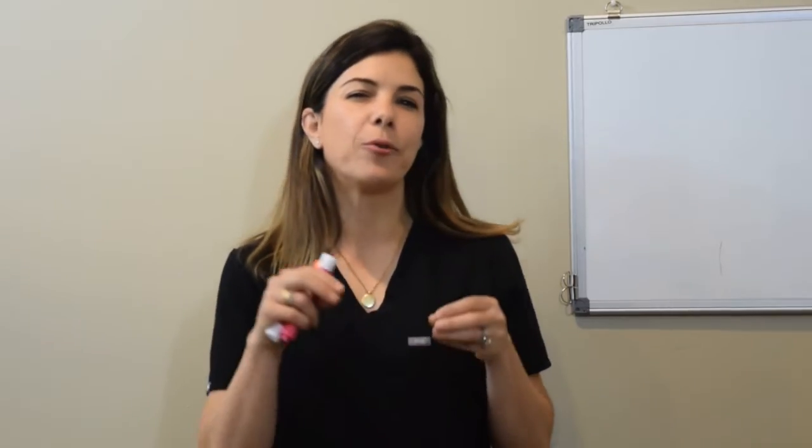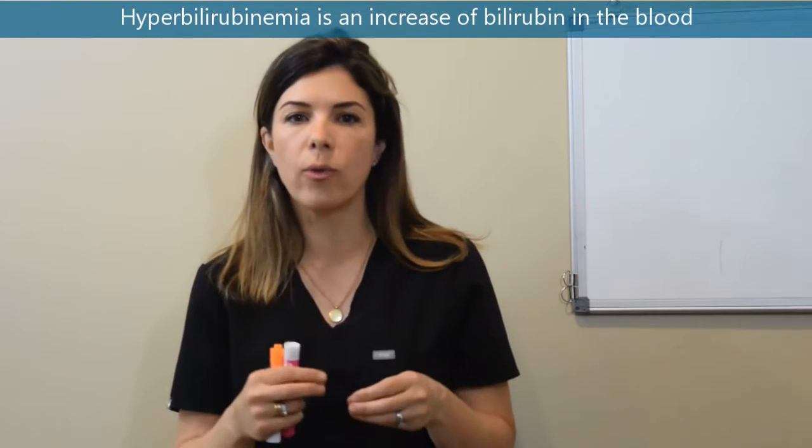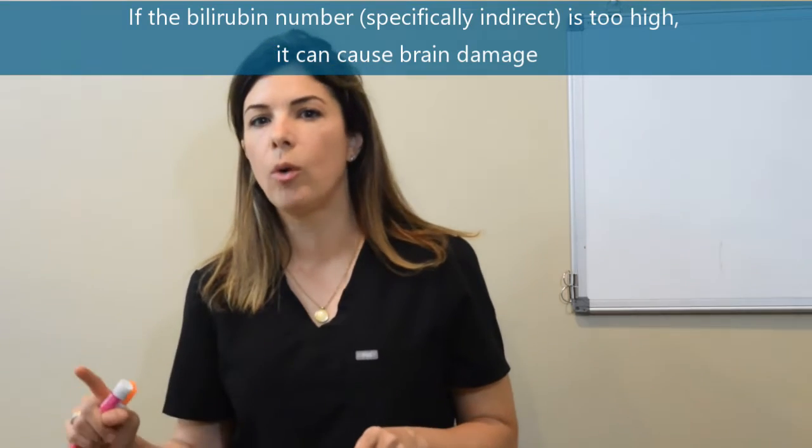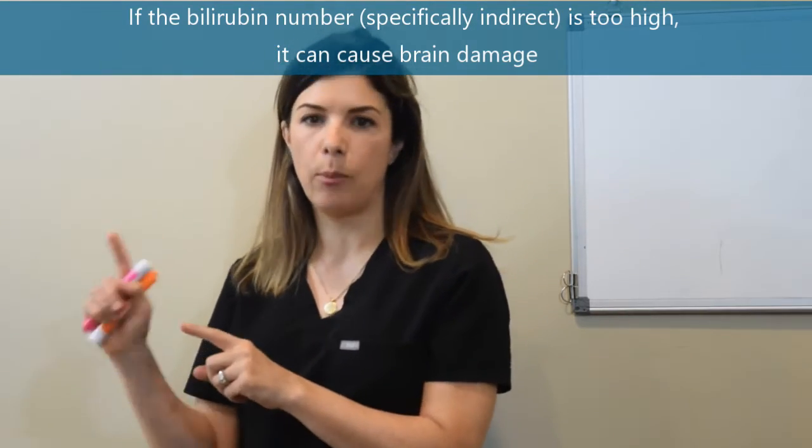First of all I really want to emphasize this point because it's kind of amazing how few people really understand why we care so much about hyperbilirubinemia. Hyperbilirubinemia is when you have increased bilirubin in your blood and we care about it especially indirect hyperbilirubinemia because if that number is way too high then it can result in brain damage.